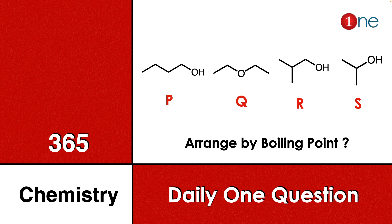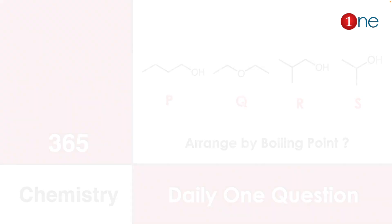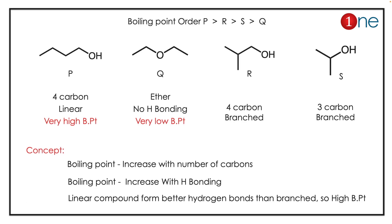Welcome to One Chemistry. This is the 365 Chemistry series — one daily question for you. Here, four different oxygen-containing compounds are given: P is a linear alcohol, Q is an ether, R is a branched alcohol, and S is also an alcohol. You have to arrange these four compounds by boiling point. The boiling point order is P, R, S, Q.